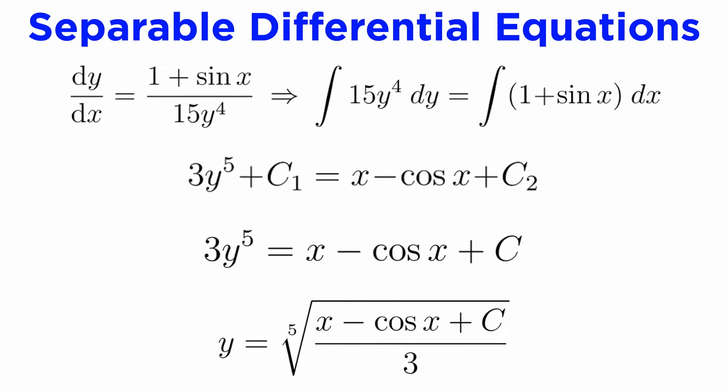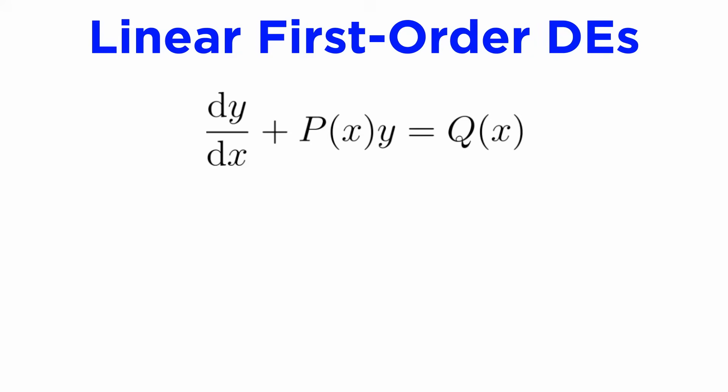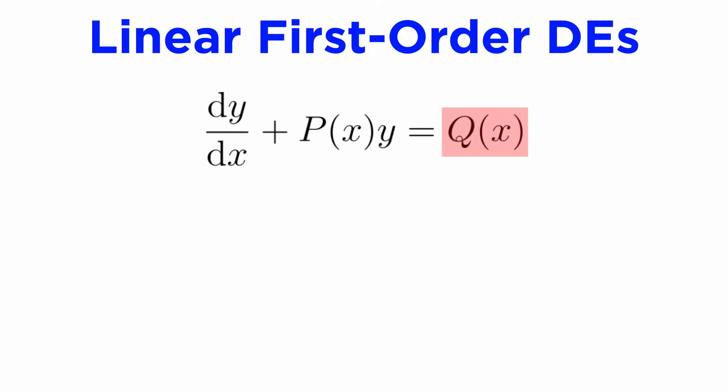In the last tutorial we saw how to solve separable differential equations, but not all DEs are separable. Another important class of DEs are linear differential equations, and in this tutorial we'll focus on the case where the order of the DE is equal to one. A linear first order equation has the general form dy/dx plus p(x) times y equals q(x), where p and q are functions of the independent variable x.